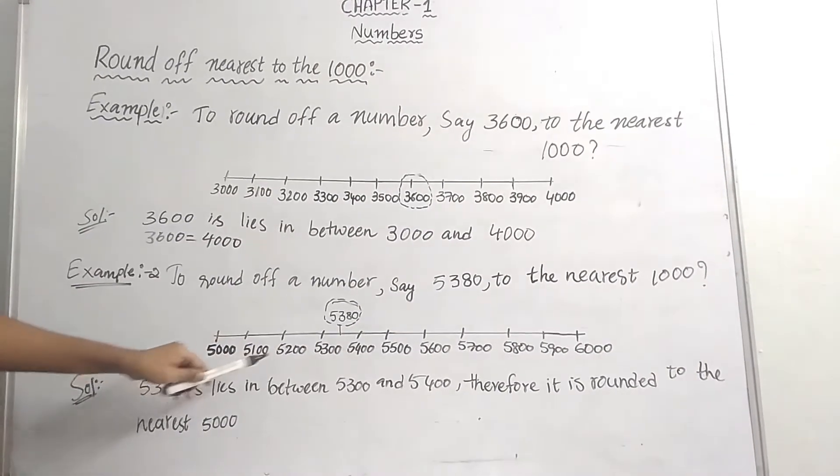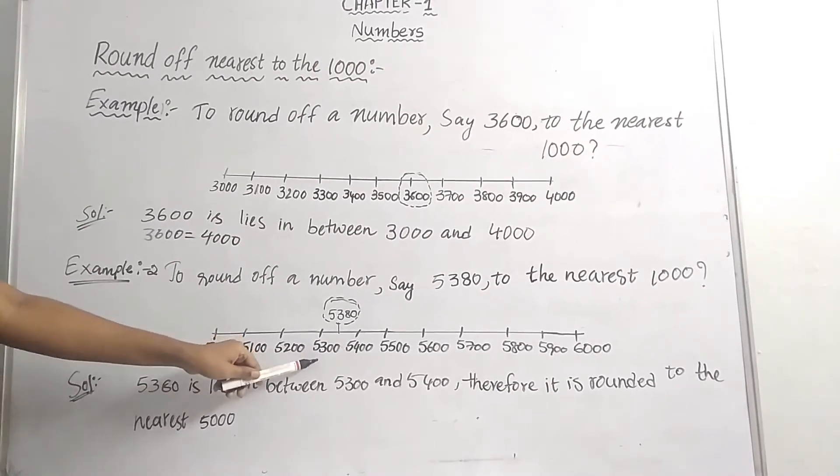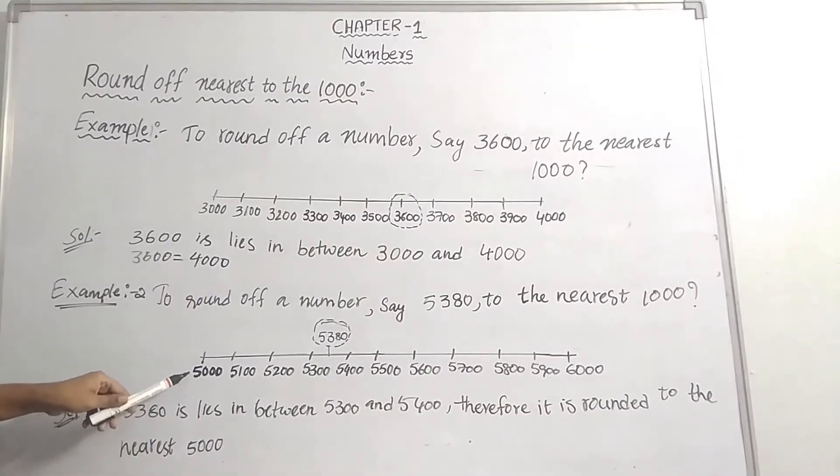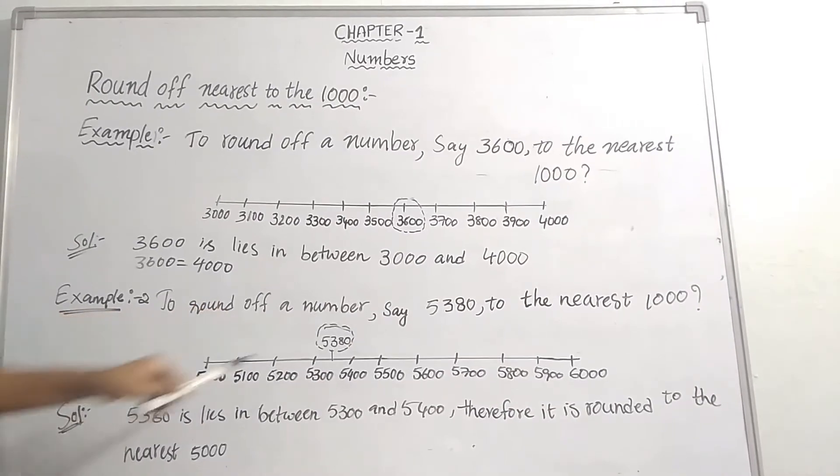5380 lies in between 5300 and 5400. First, take a scale from 5000 to 6000.